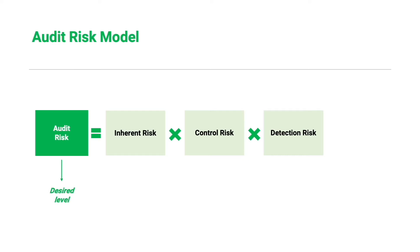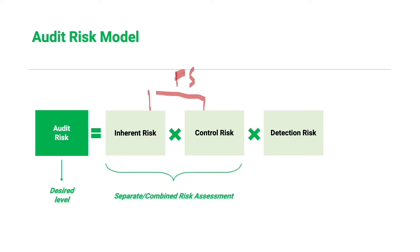The first two components of audit risk — inherent risk and control risk — make up the risk of material misstatement, which is the possibility that the financial statements are materially misstated. This risk is a function of management's actions and controls, so as auditors we cannot manipulate or influence it. The only thing we can do is assess them. We can make a separate or combined assessment of inherent risk and control risk, known as Combined Risk Assessment or CRA.